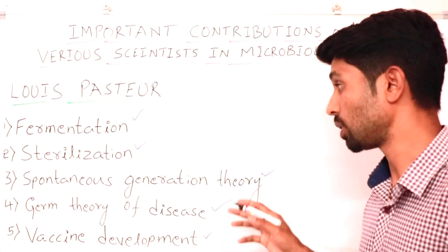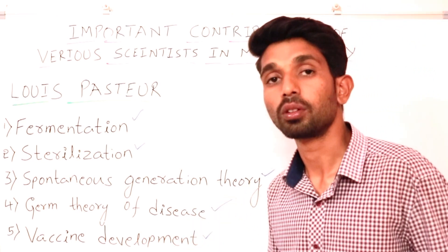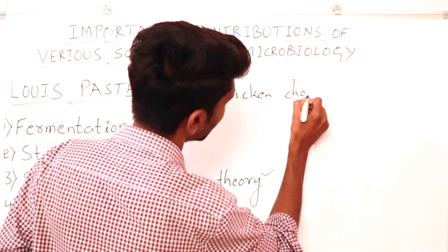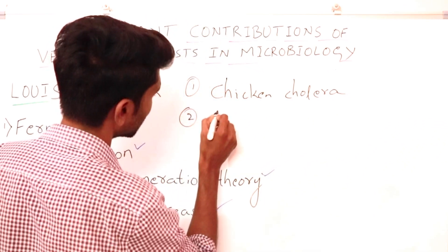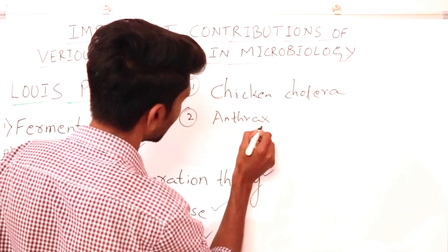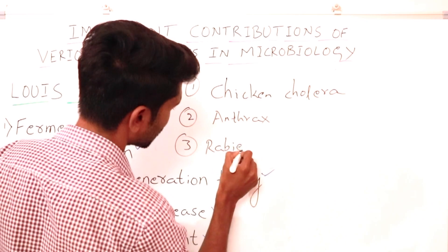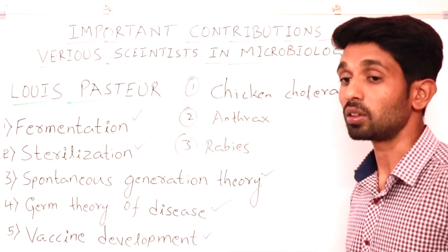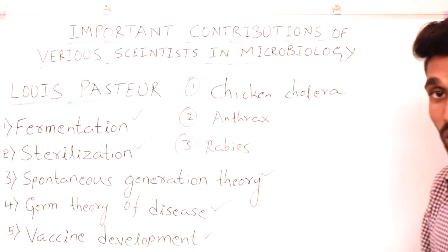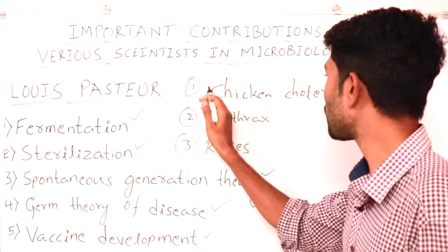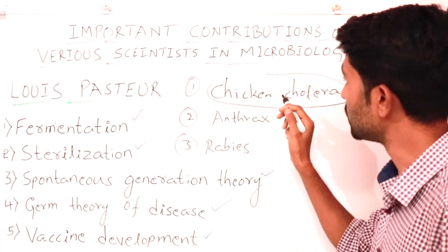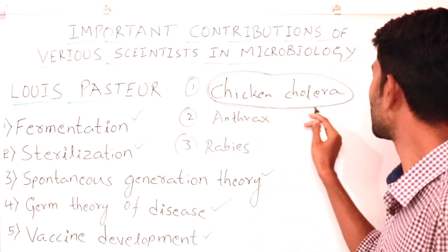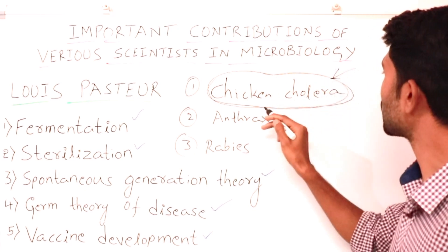Now we come to vaccine development. Louis Pasteur developed three important vaccines. The first one is chicken cholera, the second is anthrax disease. Chicken cholera mainly affects chickens, and because of this disease the poultry business economy suffered greatly. Pasteur studied the bacteria behind this disease and successfully prepared a vaccine. After injecting his vaccine, the chickens were completely cured from chicken cholera.